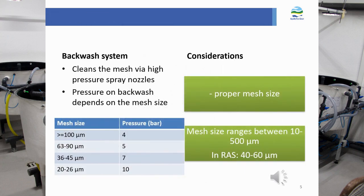The backwash system cleans the mesh via pressurized spray nozzles. The pump pressure should be selected according to mesh size: mesh larger than 100 microns requires around 4 bar; 63–90 micron mesh requires around 5 bar; 36–45 micron mesh needs around 7 bar; and the fine 20–26 micron mesh requires at least 10 bar. Mesh sizes range between 10 and 500 micrometers, but the most commonly used in aquaculture is between 40 and 60 micrometers.